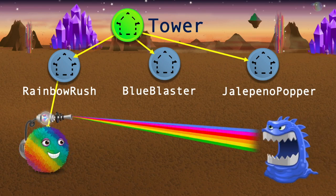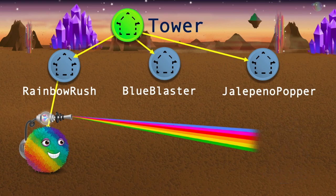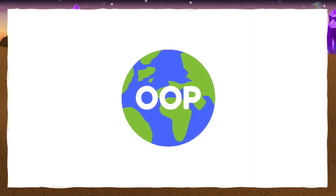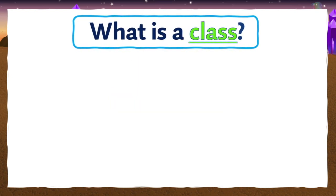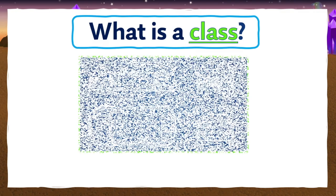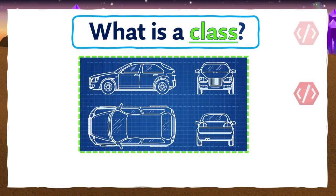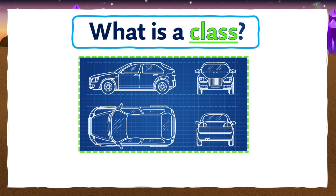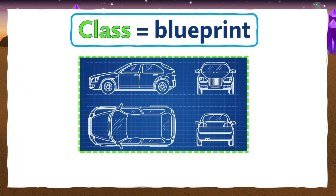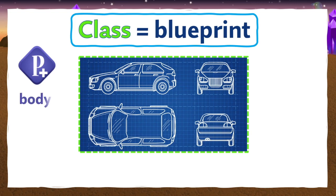Not sure what I'm talking about? Let's break this down from the beginning. In our last video on object-oriented programming, we answered the question: what is a class? If you need a reminder, a class is a definition or blueprint from which individual objects are created. Think about the blueprint for a car — there are properties that all cars have, like a body, wheels, and engine.